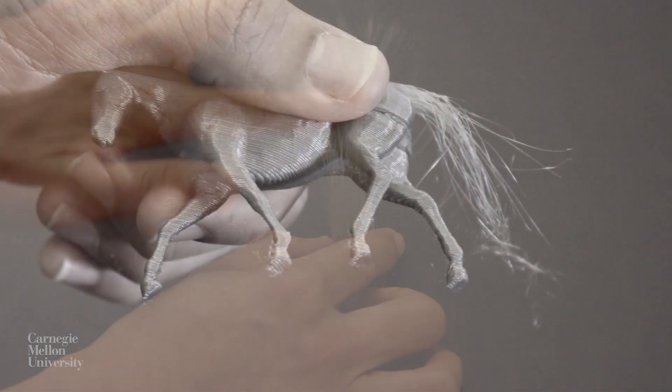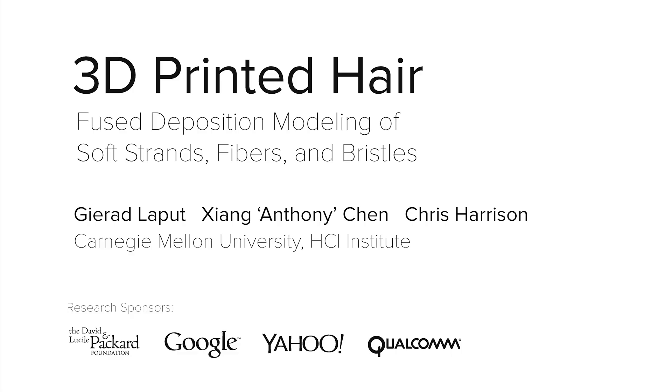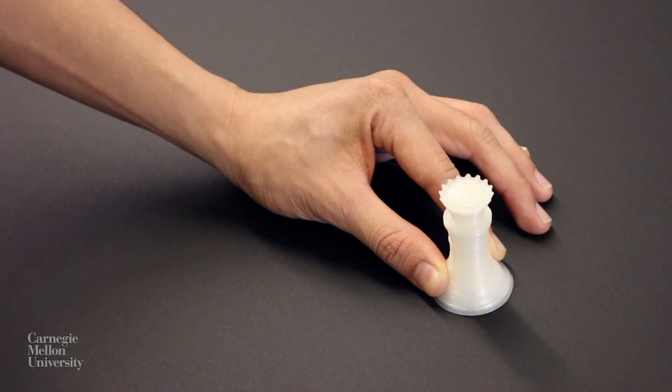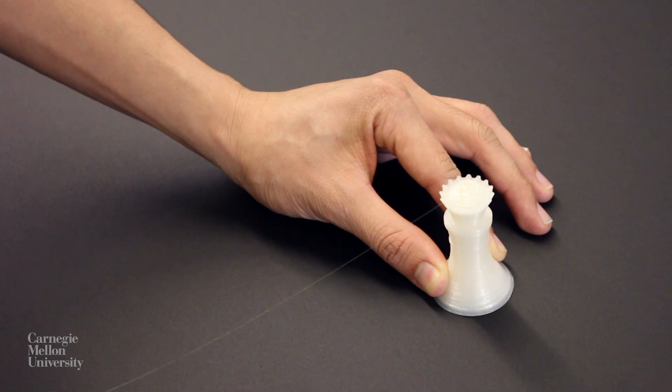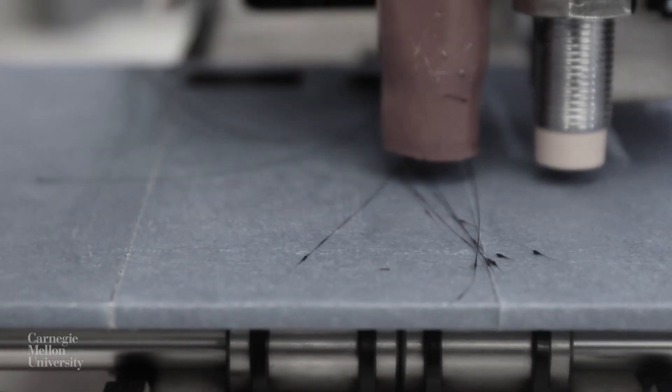We introduce a technique for 3D printing soft strands, fibers, and bristles using fused deposition modeling. Our work was inspired by the residual strings that form when operating a glue gun. We emulate these strings using 3D printers.